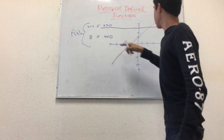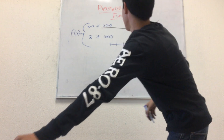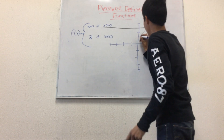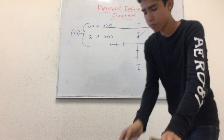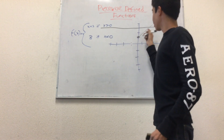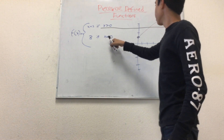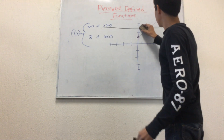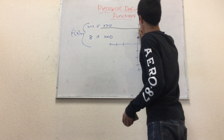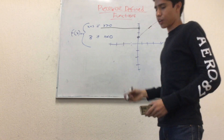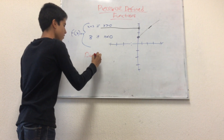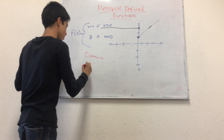Now we need to make them respect the rule. The first one has to be x greater than zero, so we erase the part of the line where x is not greater than zero, and we put an open gap because it's not equal, only greater. For the second one, x must be less than zero, so everything that does not respect the rule we erase, and we put an open gap because it doesn't touch zero.